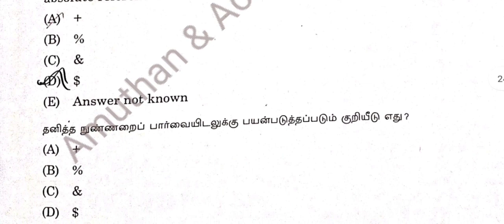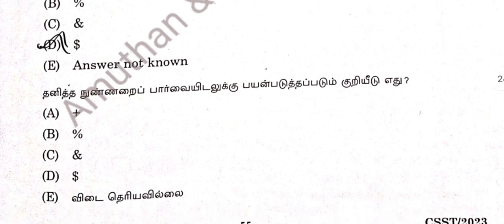Question 93: Which of the following symbols is used to make a cell address an absolute reference in Excel? Option D — the dollar symbol.